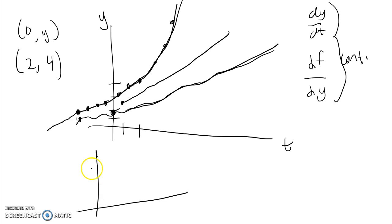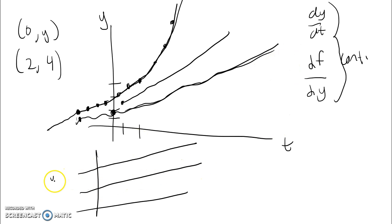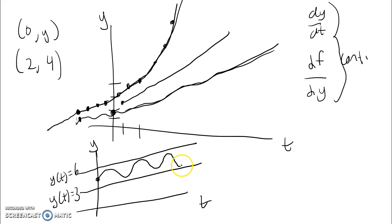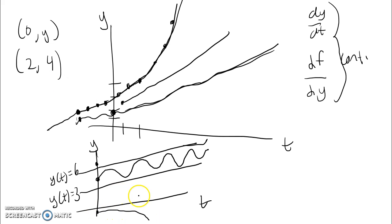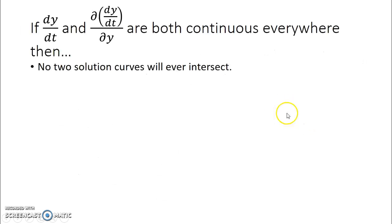If dy/dt and the partial of f with respect to y are continuous everywhere, and there are two equilibrium solutions — say y(t) equals 6 and y(t) equals 3 — and I pick an initial condition between them, that solution curve is bound between the two equilibrium solutions and cannot cross either one. Similarly, a curve above the upper equilibrium can go upward, and one below can go downward, but no curves can intersect. To summarize: if dy/dt and the partial are continuous everywhere, no two solution curves will ever intersect — and that is one of the most useful results of this theorem.